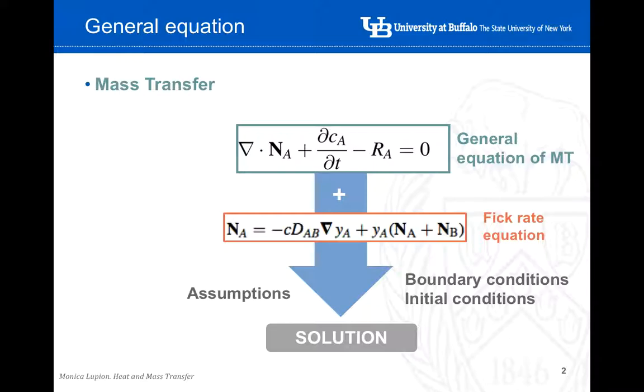The general equation of mass transfer is indicated here. We covered this equation on lecture 11 and it says that the variation in the molar flux plus the variation in the concentration with time minus the variation due to the chemical reaction is equal to zero.